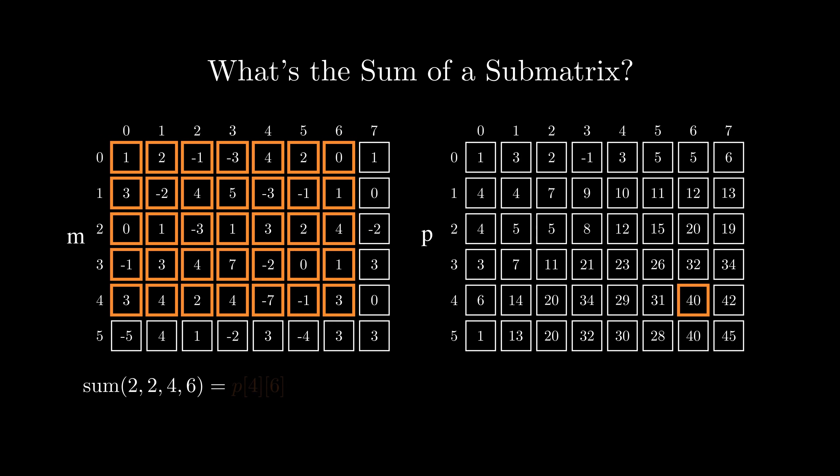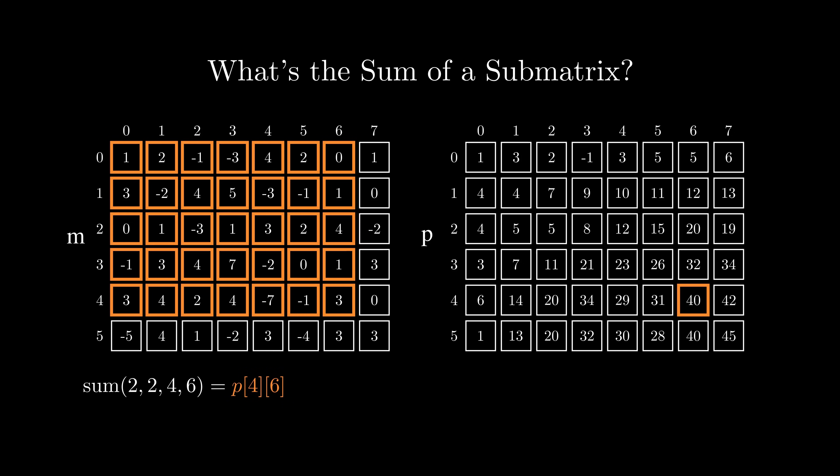First, let's notice that the coordinate 4,6 actually represents the sum of all the numbers from 0,0 to 4,6. But it also contains a lot of redundant numbers which we don't need. We can get rid of them by subtracting the two rectangles which are represented in the prefix sum with coordinates 4,1 and 1,6.